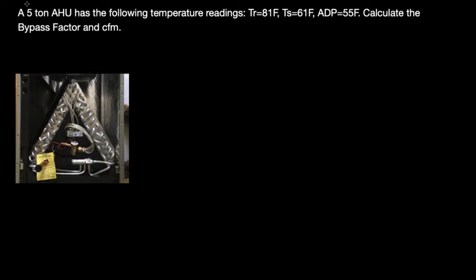To begin with, the bypass factor — as we explained in the other video — is how efficient the coil is. Actually, that efficiency is the contact factor, and the contact factor is one minus the bypass factor. So the bypass factor represents an imperfection or inefficiency of the coil. Let's put that into simple words.